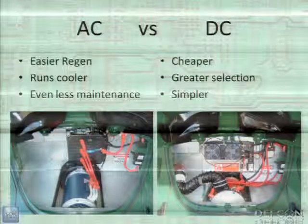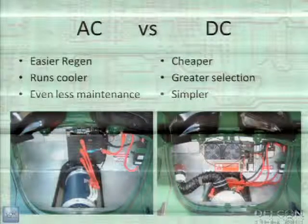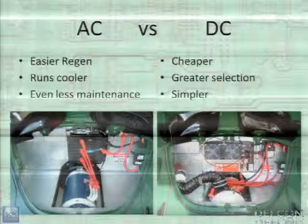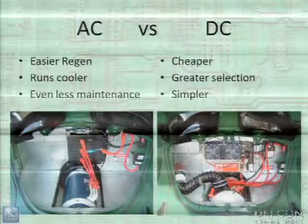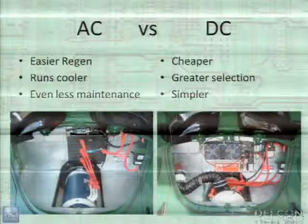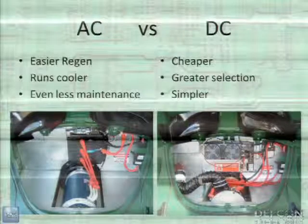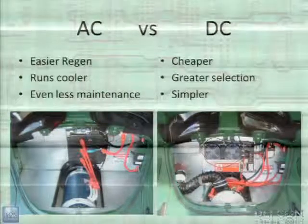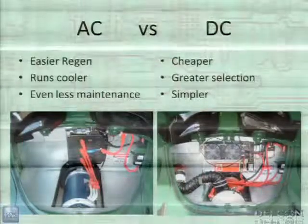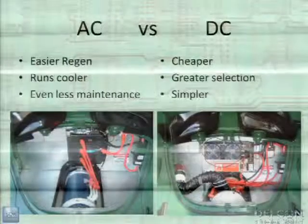AC versus DC: most OEMs use AC motors because they have regenerative braking, but regen only gives you 10 to 30% of your energy back. AC costs a lot more — a motor-controller combo for AC runs about $5,000 versus $2,000 to $3,000 for DC. If you drive smartly, you'd get most of that regen benefit anyway. AC motors are brushless — the only thing that can ever wear out is the bearings, and the rest is good for life.